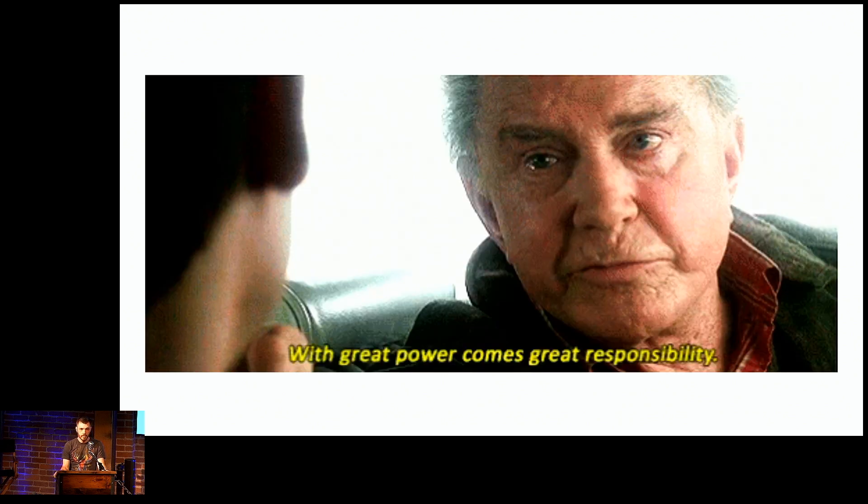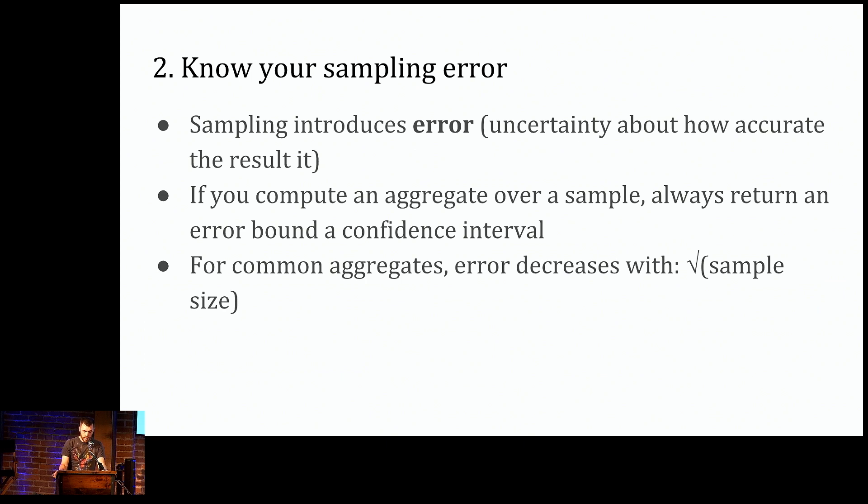So the input data can grow arbitrarily large, but you can still get away with a fixed size sample for a given margin of error. But as always, with great power comes great responsibility. The second thing that BlinkDB teaches us is that we need to be explicit about surfacing sampling error in our results. We don't want to build systems that mislead users into thinking that the results that we provide are more accurate than they really are.